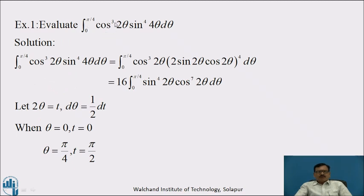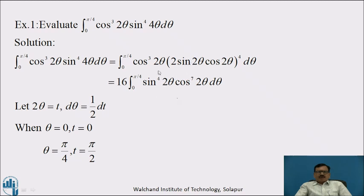Now we will see another example: evaluate the integral from 0 to π/4 of cos³(2θ) · sin⁴(4θ) dθ. We write the integral and first express it in the standard trigonometric form of Beta Function. Keeping cos³(2θ) as it is, sin⁴(4θ) can be written as (2 sin2θ cos2θ)⁴ using the formula sin(2θ) = 2 sinθ cosθ. We substitute 2θ = t.